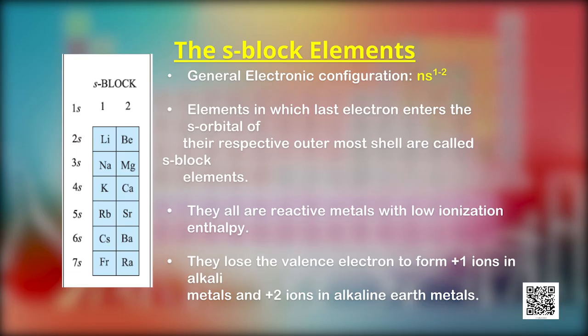Let us discuss the general characteristics of elements in each block. S-block elements are those in which the last electron enters the s-subshell. Elements of group 1 (alkali metals) and group 2 (alkaline earth metals), which have ns¹ and ns² outermost electronic configurations, belong to this block. They are all reactive metals with low ionization enthalpies. They lose the outermost electron to form +1 ions (alkali metals) or +2 ions (alkaline earth metals). Because of high reactivity, they are never found pure in nature.